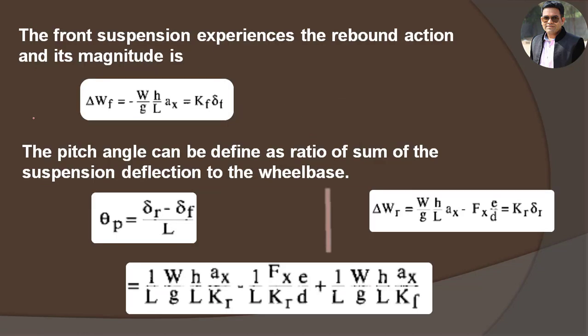Likewise, we can consider the front suspension. In the case of front suspension, the load transfer occurs towards the rear, so we apply a negative sign. The vehicle drive is provided at the rear side, so there is no drive force term for the front. Using the front suspension spring rate KF and spring deflection delta F, we write: delta WF = minus (W/G)·(H/L)·Ax = KF · delta F.